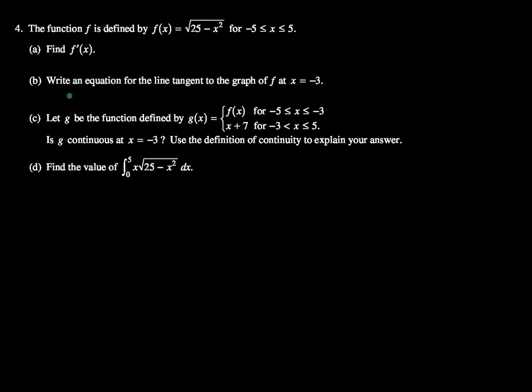All right, part b. It asks us to write an equation for the line tangent to the graph of f at x equals negative 3. And we have two things we need to do for this. We need to find a slope and we need to find the point.